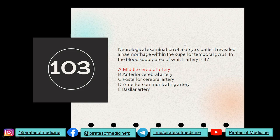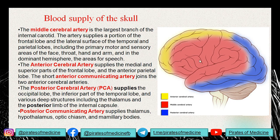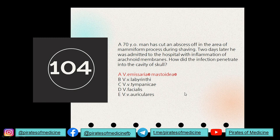Question 103: urological examination revealed a hemorrhage within the superior temporal gyrus — in the blood supply area of which artery is it? The blood supply of the superior temporal gyrus is by the middle cerebral artery. The lateral side of the brain, including the temporal gyrus and temporal part, is supplied by the middle cerebral artery.